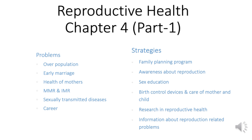Now for the strategies: first is the Family Planning Program, which was introduced in 1951. Next is awareness about reproduction — audio-visual aids, print media, government and non-government agencies are doing good work to create awareness among people. Parents, close relatives, friends, and teachers can also play a major role in giving information. Next is sex education — it should be introduced and encouraged in schools to provide the right information about myths and misconceptions about sex-related aspects.